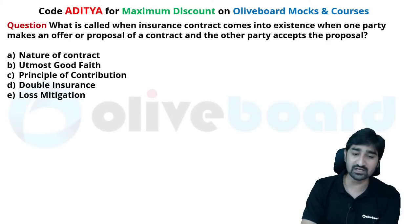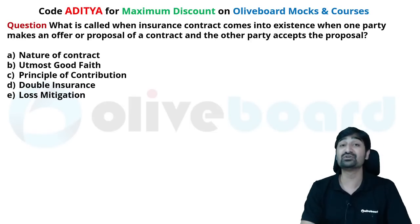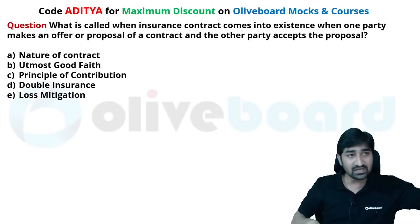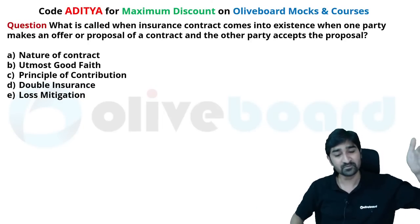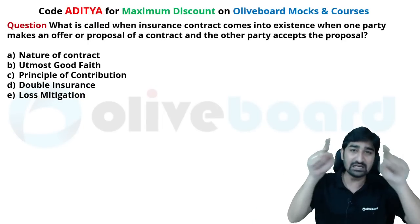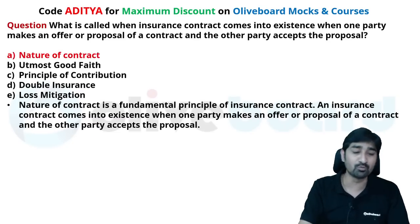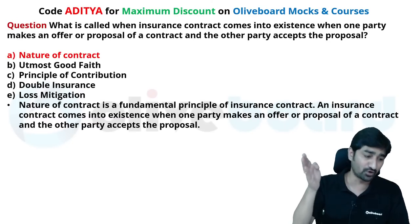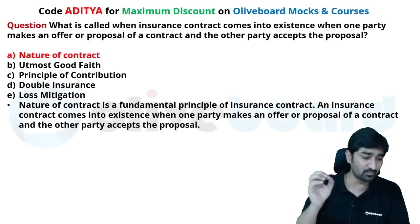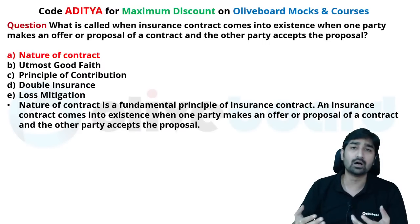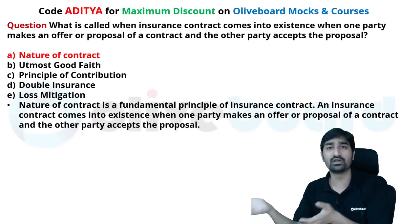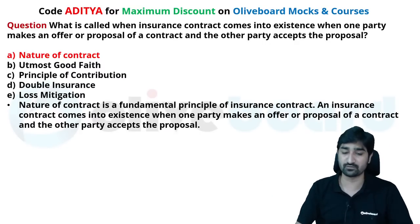What is it called when the insurance contract comes into existence — when one party makes an offer and the other party accepts? The agreement between the insurance company and the insured is called the nature of contract. That paper — the form between the insurer and insured — is called the nature of contract. Many students cannot answer this in the exam because they expect other options, but the correct answer is nature of contract.